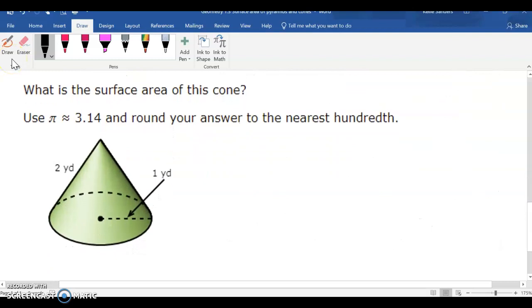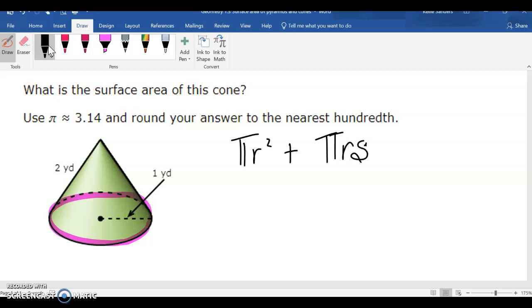Okay, now we have a cone. So, we have a new formula. The cone's base's shape is a circle. So, we're going to find the area of a circle. So, pi r squared plus pi r s, and s stands for the slant height, and that's exactly what it means. It's the height that is slanted.